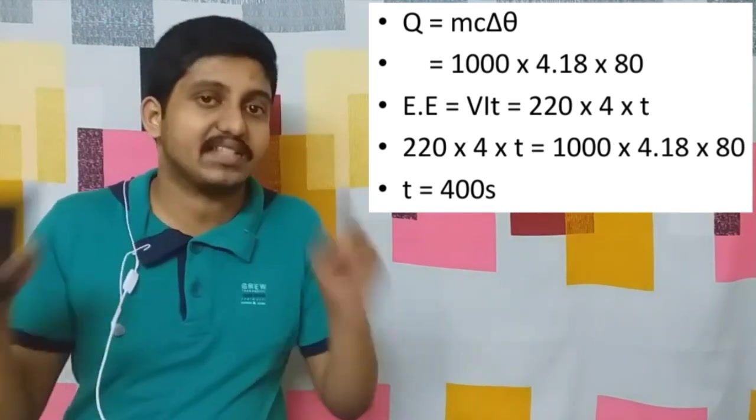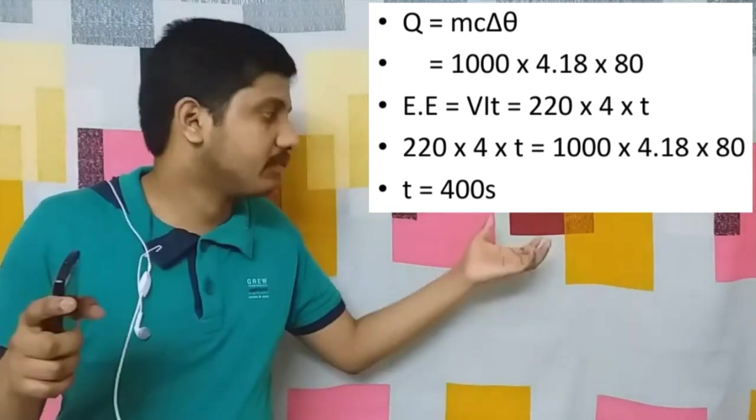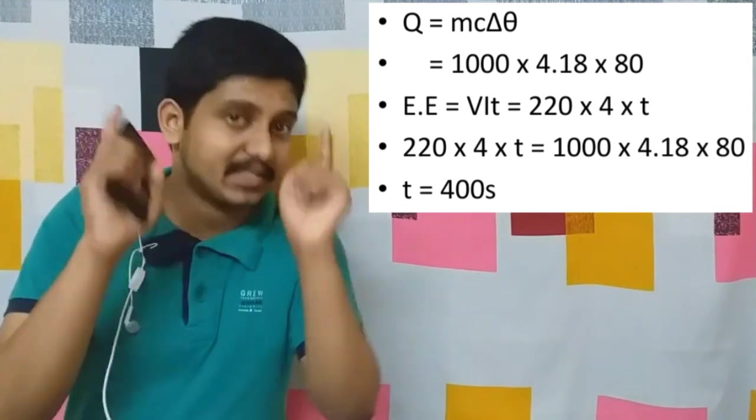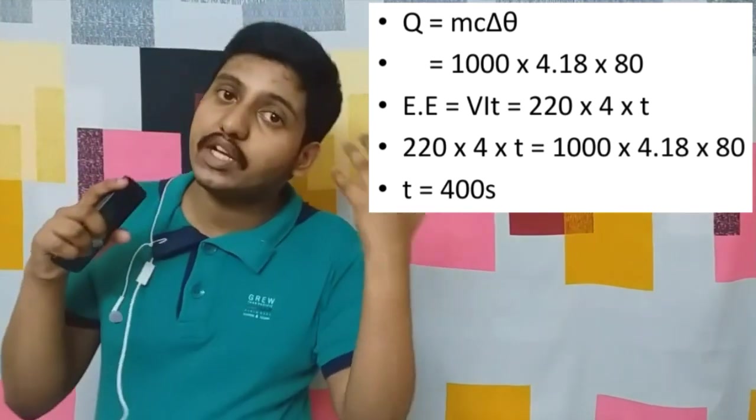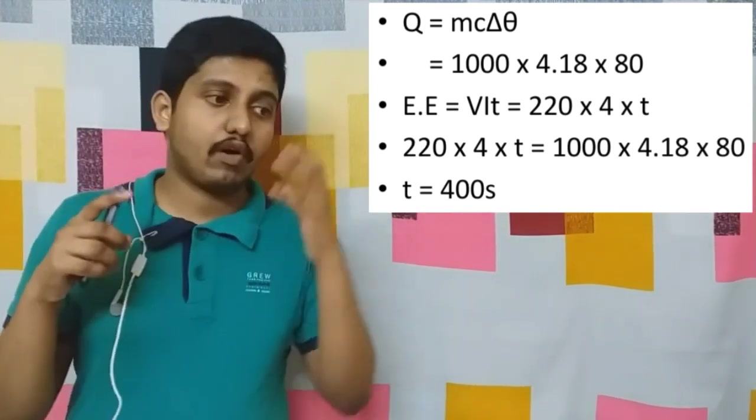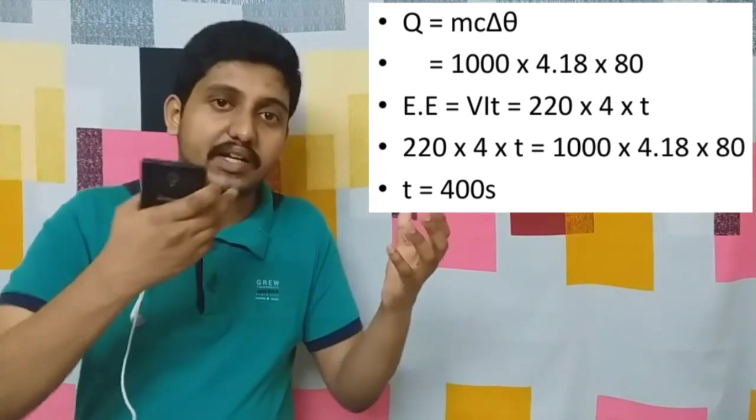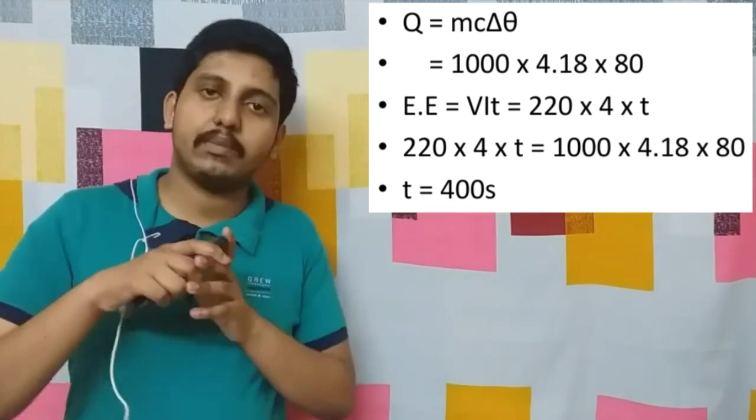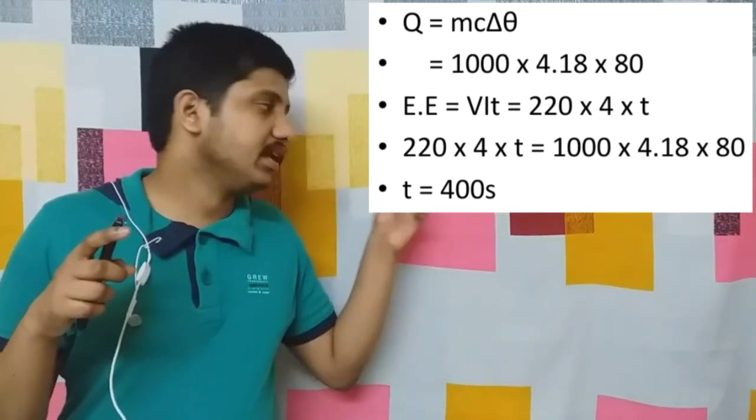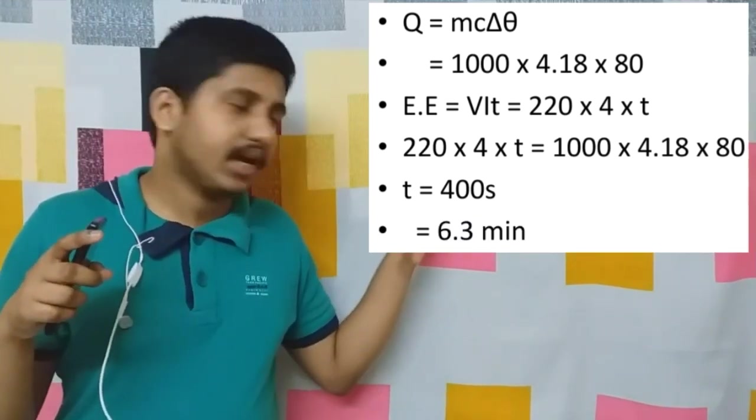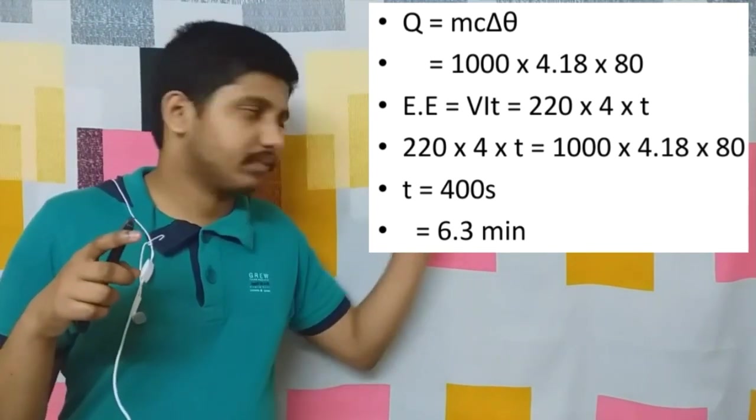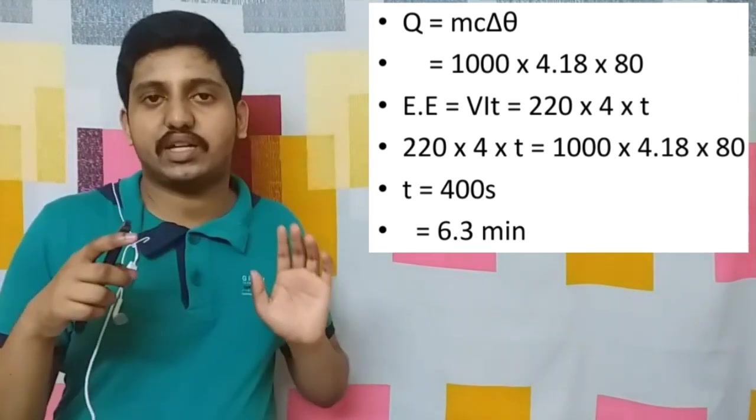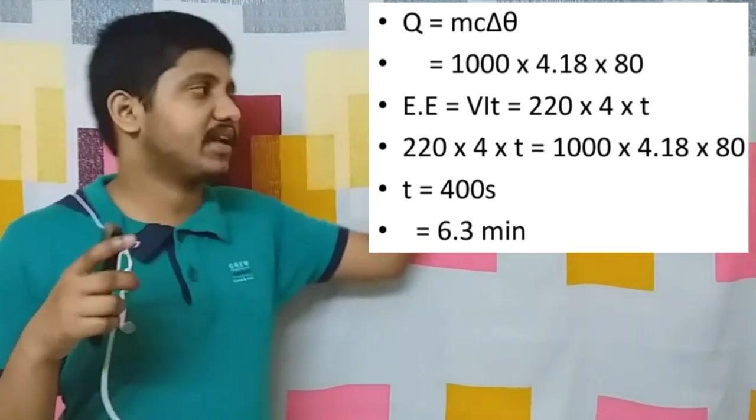About 6 point something, and there is only one option. We have got the answer in SI units, which is seconds. How to convert it into minutes? 400 seconds = 400/60 minutes = 20/3 minutes, which is approximately 6 point something minutes. There is only one option, that is 6.3 minutes.